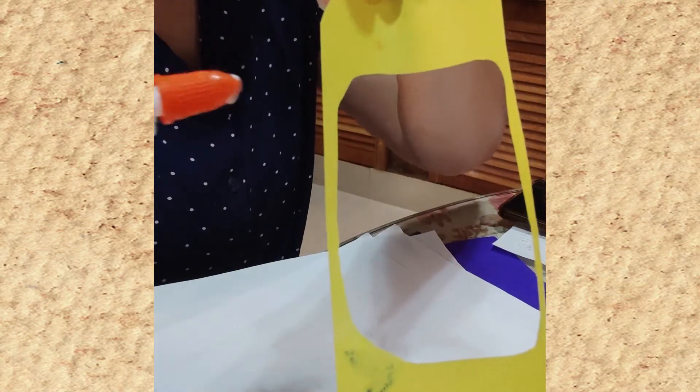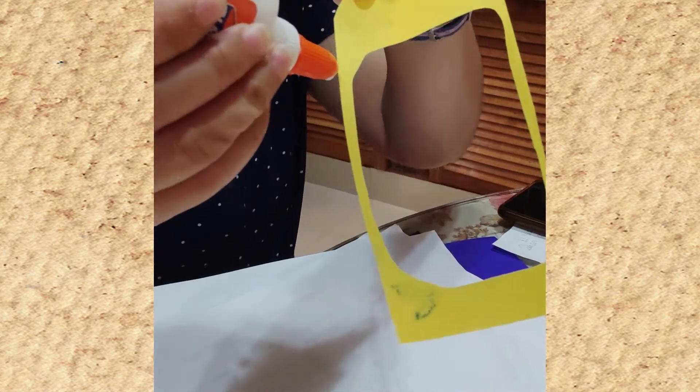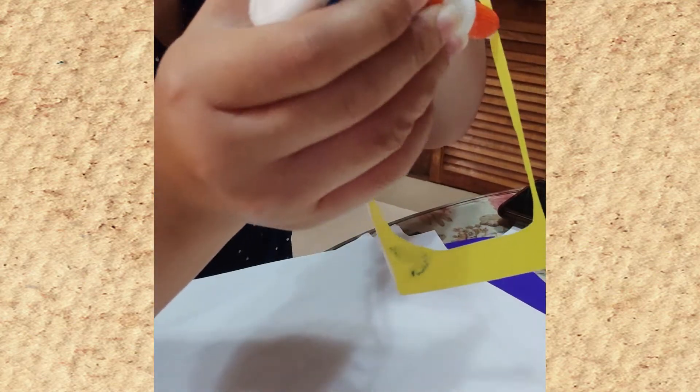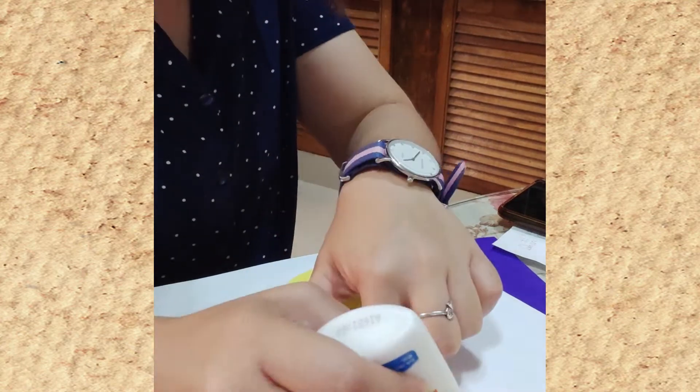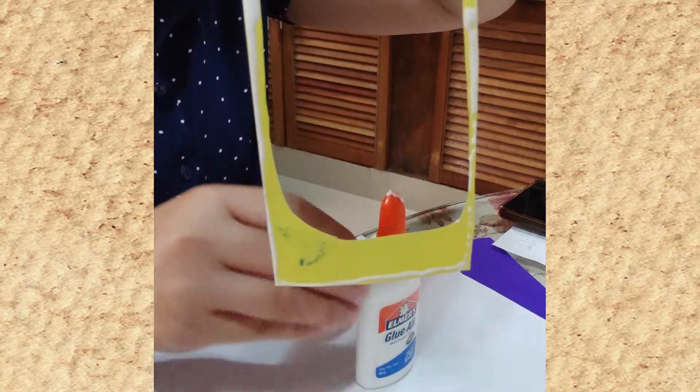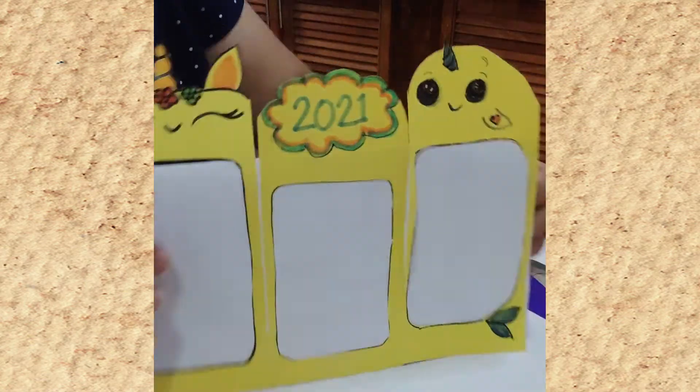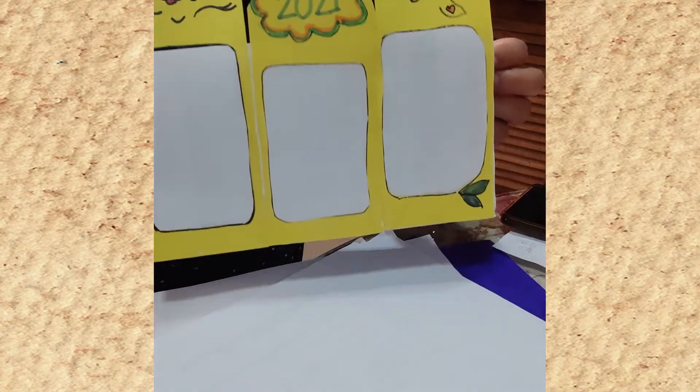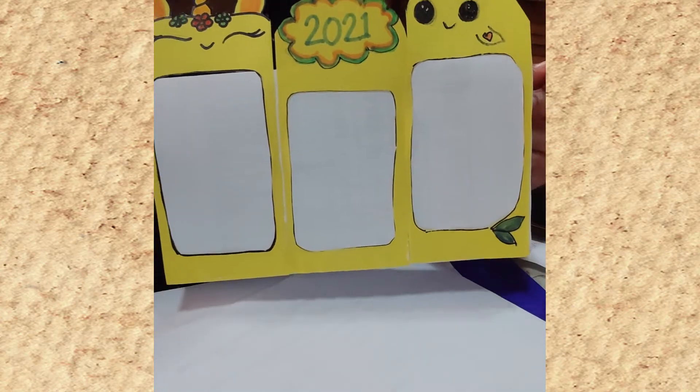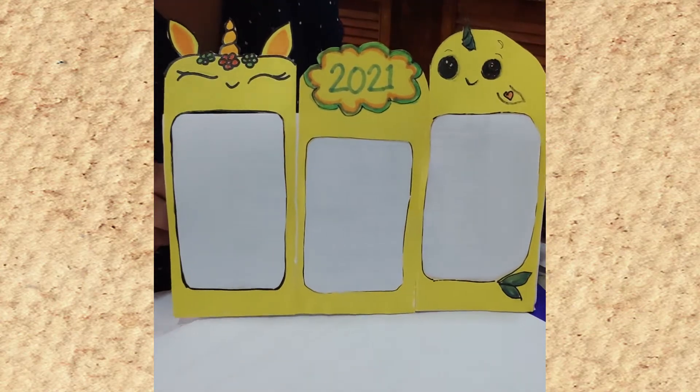We will now put a glue at the edges. There, let us get the frame stand. There you go. We are almost done with our DIY calendar.